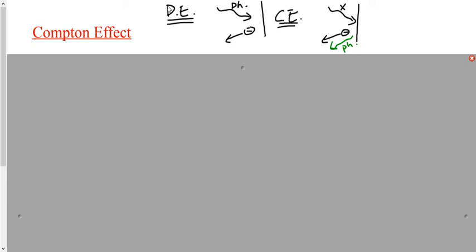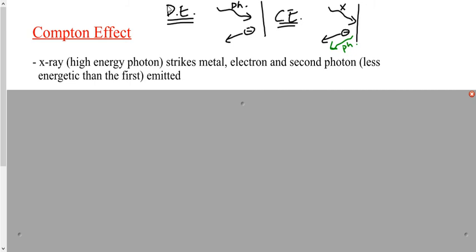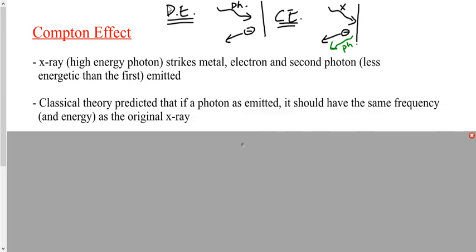Classical theory, or pre-Einstein, or incorrect physics, doesn't match up with observations sometimes. The observations showed that, in fact, that second photon that was ejected was not the same as the first photon. That second photon was less energetic than the first photon — E2 is less than E1. We've said classical theory sometimes is a good approximation, but not for the photoelectric effect, and not for the Compton effect.